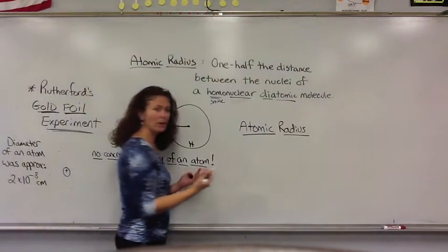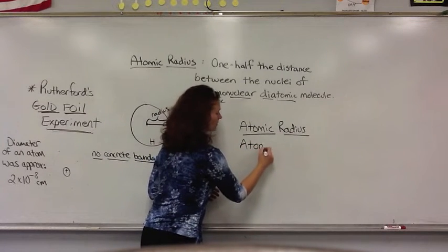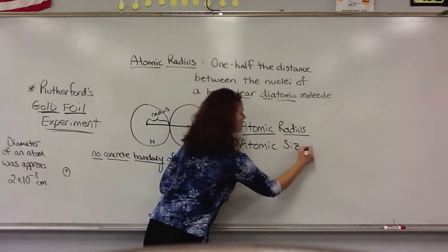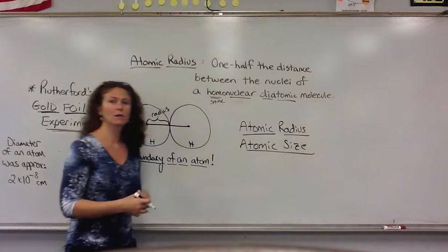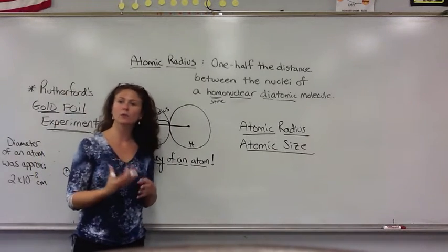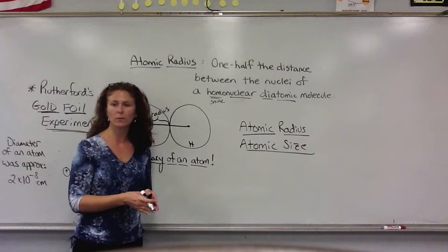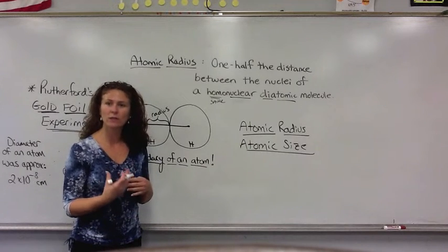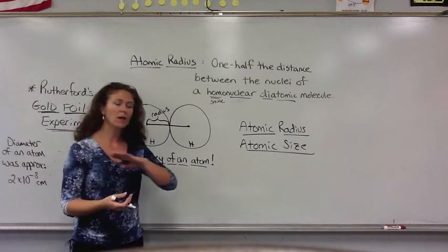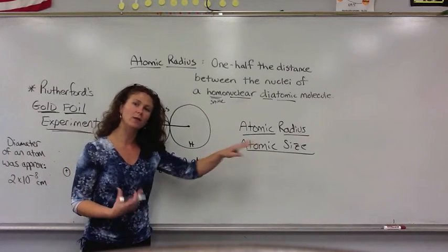Now many times when we talk about atomic radius, I will refer to it as the atomic size, and we're going to look at common trends within groups, the elements that go down in a vertical column on the periodic table, and we're going to look at trends in atomic size and atomic radius as we go across a period from left to right on the periodic chart.